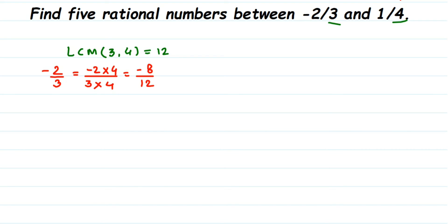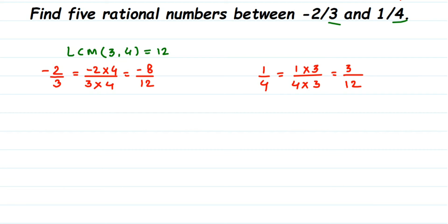We do the same for the second number, 1 by 4. We want the equivalent rational number with denominator 12. To get 12 from 4, we multiply by 3, so we multiply 3 in both the denominator and numerator. This gives us 3 by 12.